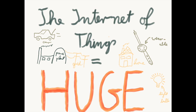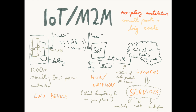The Internet of Things is going to be huge. We're going to connect everything from cars to power plants to the electrical grid. We're going to have smart homes and wearable devices. This slide shows an exemplary architecture of an IoT or M2M solution. IoT stands for Internet of Things, and M2M is machine-to-machine communication, which is the industrial term for doing similar things.